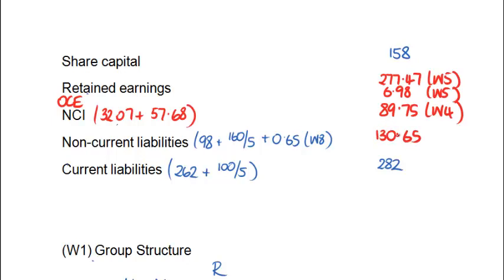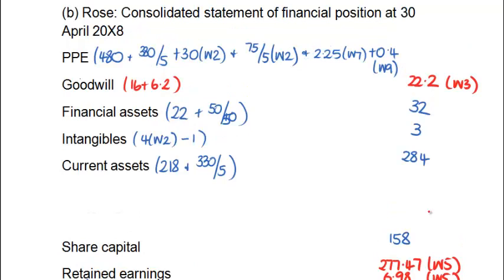We're now just going to do some housekeeping — add up our totals for non-current liabilities and work out our SFP total. I acknowledge the fact that the chances are I've made at least one mistake, but we've got a figure of 944.85. Let's now take a look at our assets. We've still got to put in a figure for PPE: 603.65. Work out our total — this is the knees-trembling, eyes-closed part of the question — and it looks like we've had a lucky day and the balance agrees.